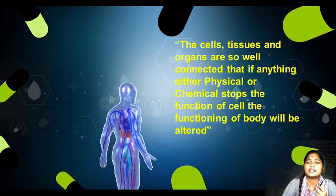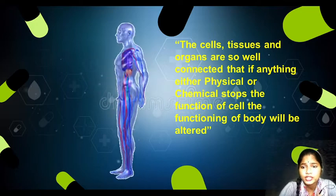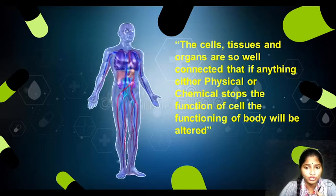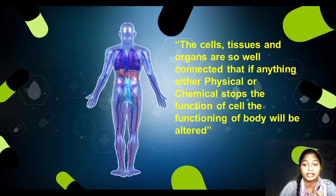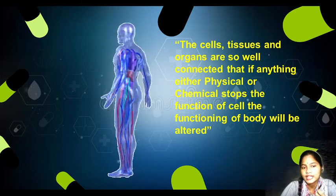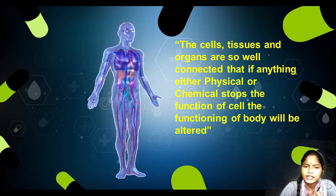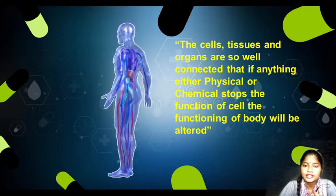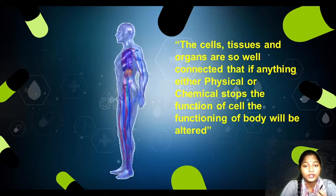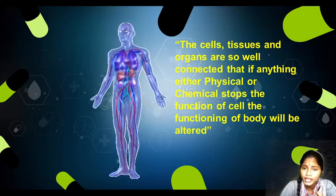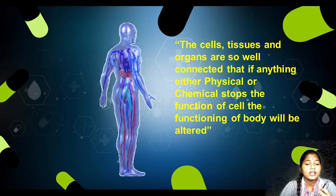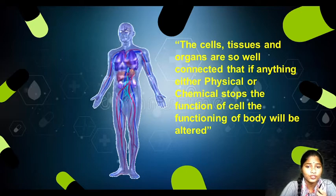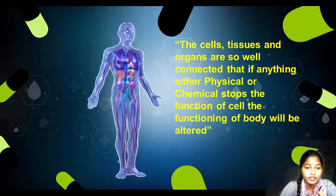The cells, tissues, and organs are so well connected that if anything — either physical or chemical — stops the function of a cell, the functioning of the body will be altered. Just as we saw in the kidney-brain example, our body's organization has such unity that one cell, one tissue, or one organ is so interrelated and interconnected that if even a slight change occurs in any of them, the full functioning of the body will be changed.